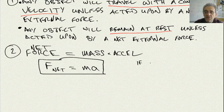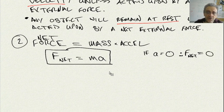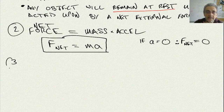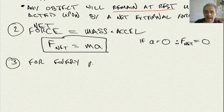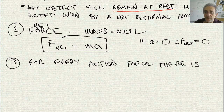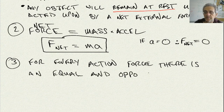If the acceleration on an object is zero, then the net force must also be zero. If acceleration equals zero, therefore net force on the object must also equal zero. And the third law of classical mechanics states that for every action force there is an equal and opposite reaction force.